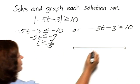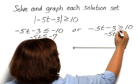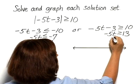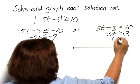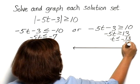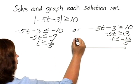Working over here, adding 3 to both sides gives me negative 5t is greater than or equal to 13. Dividing both sides by negative 5, I have t is less than or equal to negative 13 fifths. And these are both joined by the word or.